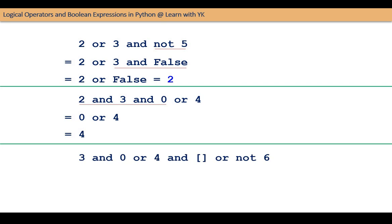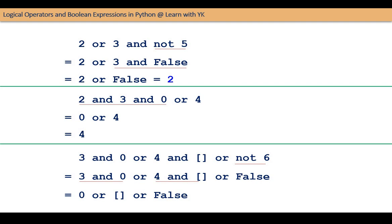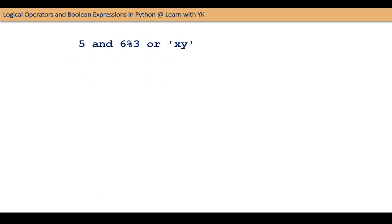Our next example is a bit complex, but you will see that it can be evaluated very easily. NOT 6 will be evaluated to FALSE, and the expression will become 3 AND 0 OR 4 AND empty_list OR FALSE. This way the expression becomes 0 OR empty_list OR FALSE, which finally evaluates to FALSE. Our next example is 5 AND 6 AND 6 AND 3 OR the string XY. Here, 6 AND 3 will be evaluated first, and the expression will become 5 AND 0 OR XY. Then 5 AND 0 evaluates to 0, and the expression becomes 0 OR XY, which finally evaluates to the string XY.